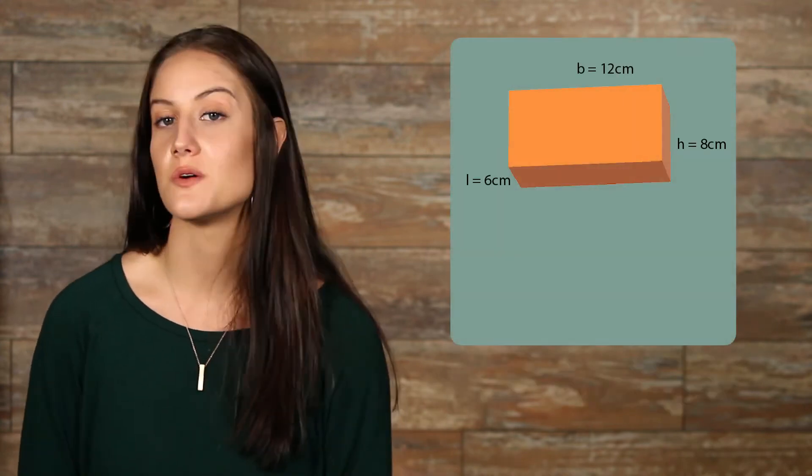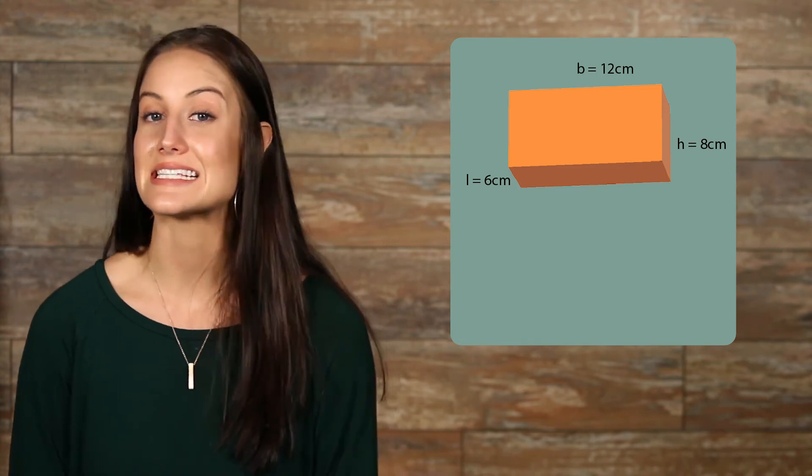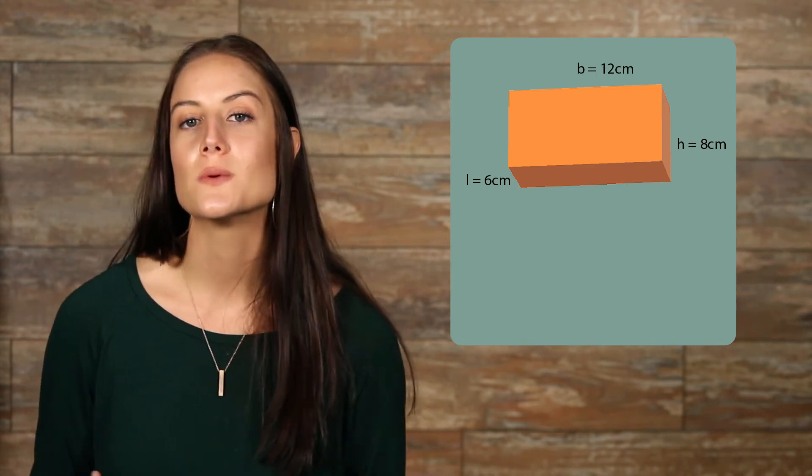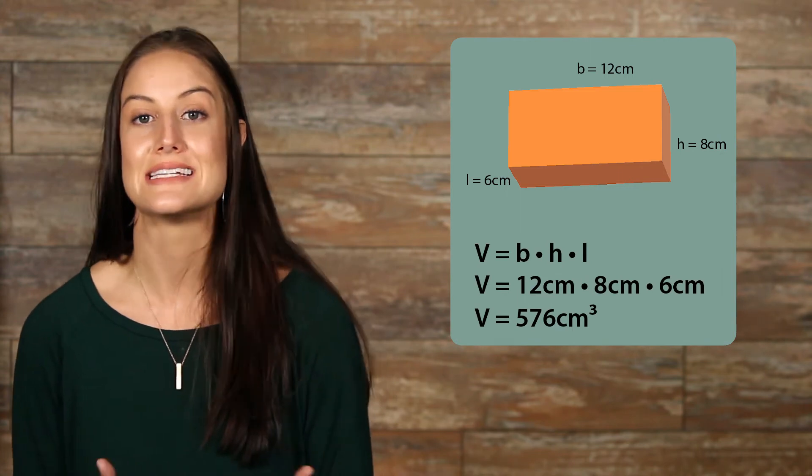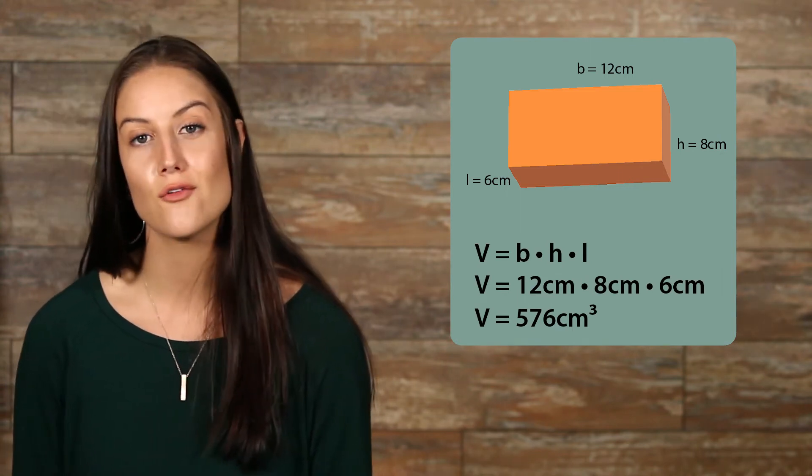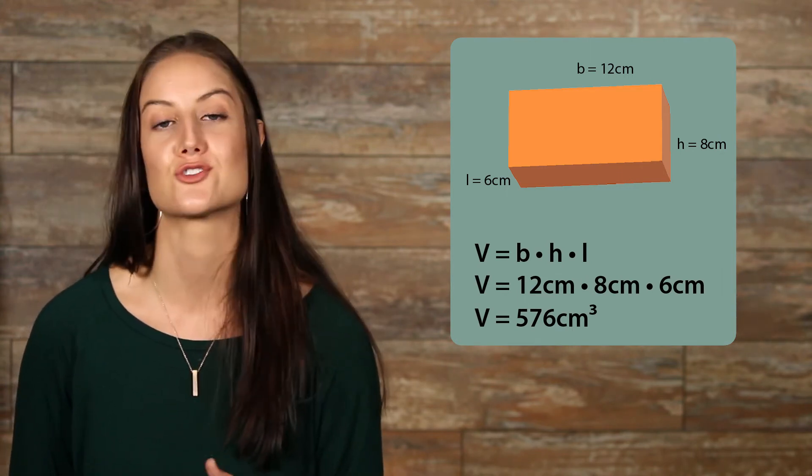Let's try another. Here we have a rectangular prism with sides that are different in distance. We have a base of 12 cm, a height of 8 cm, and a length of 6 cm. Now, all we need to do is plug those numbers into our formula, and once we solve, we get 576 cm cubed.